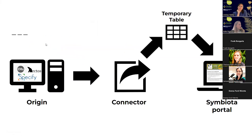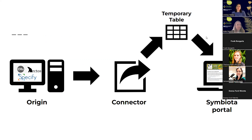You take your data from your database, translate it into a connector — a CSV file or Darwin Core Archive — and as you upload into the Symbiota portal, it goes into a temporary table in the database, and then it's fully uploaded into the Symbiota portal main database.